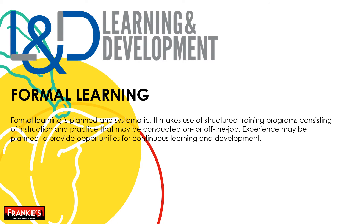Formal learning is planned and systematic. It makes use of structured training programs consisting of instruction and practice that may be conducted on or off the job. Experience may be planned to provide opportunities for continuous learning and development. Formal learning is acquired through action learning, coaching, mentoring, and outdoor learning.